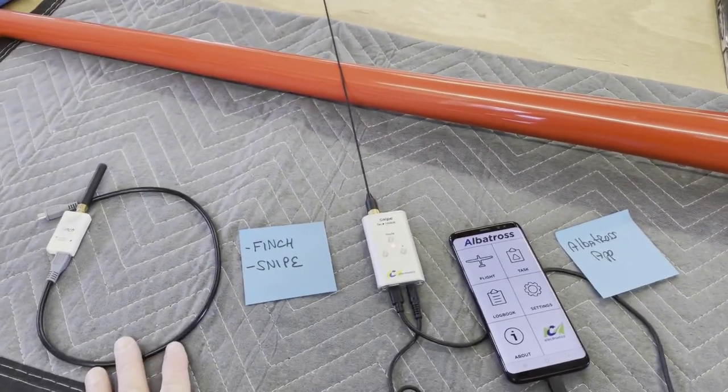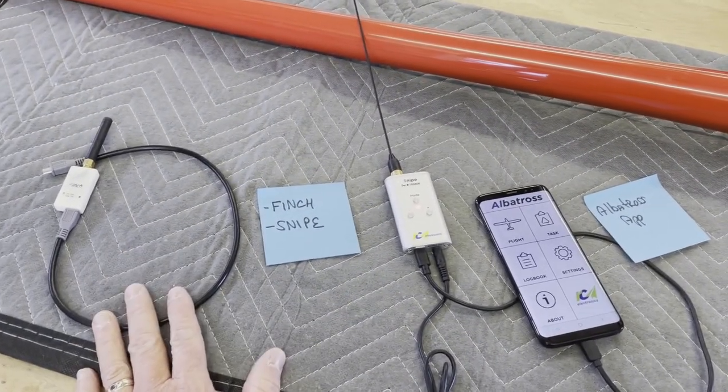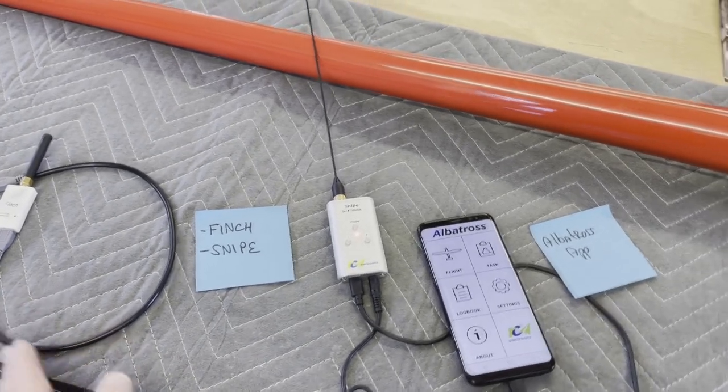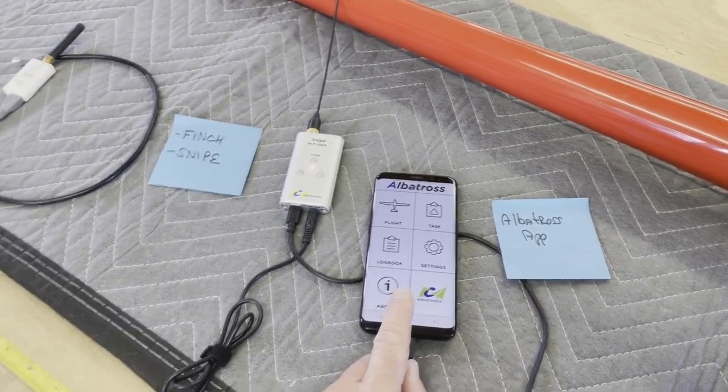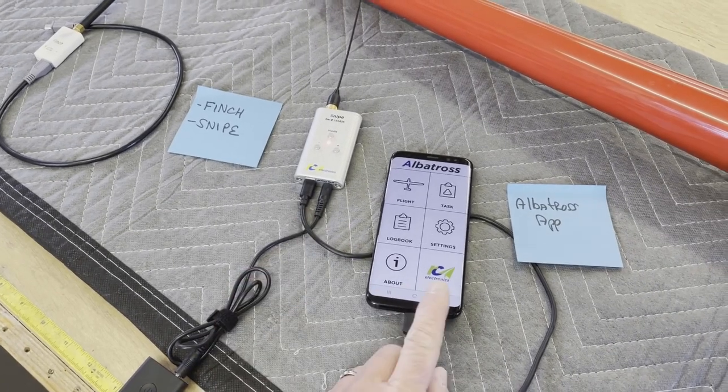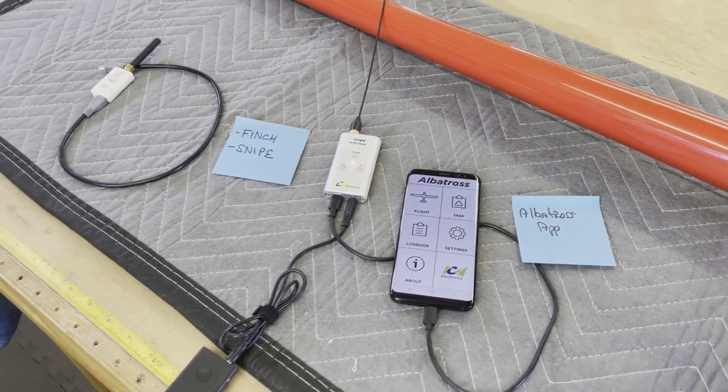But both of these have Varios, and so that would be the same. So flying it with the Finch, you have to look at the app just a little more often. Whereas if you have the Snipe, you can look at that much less of the time because you're getting audio cues.